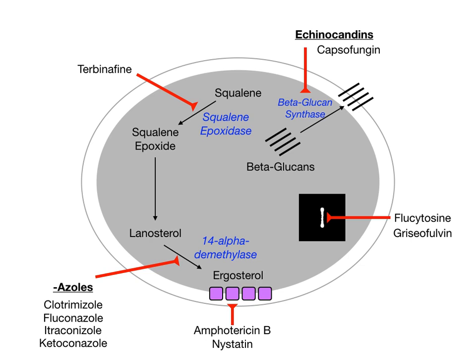If you look at the name, it's flucytosine — 'flu' and 'cytosine' are literally in the name, hinting at the mechanism: conversion to 5-fluorouracil by cytosine deaminase. Flucytosine inhibits the DNA of the fungal cell, and griseofulvin inhibits the microtubules, which prevents mitosis in the fungal cell. So they're working at the level of the nucleus and the splitting of the cell.